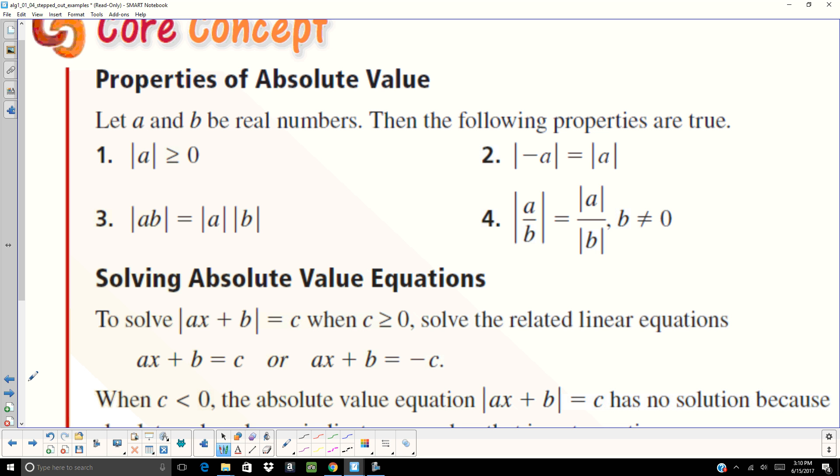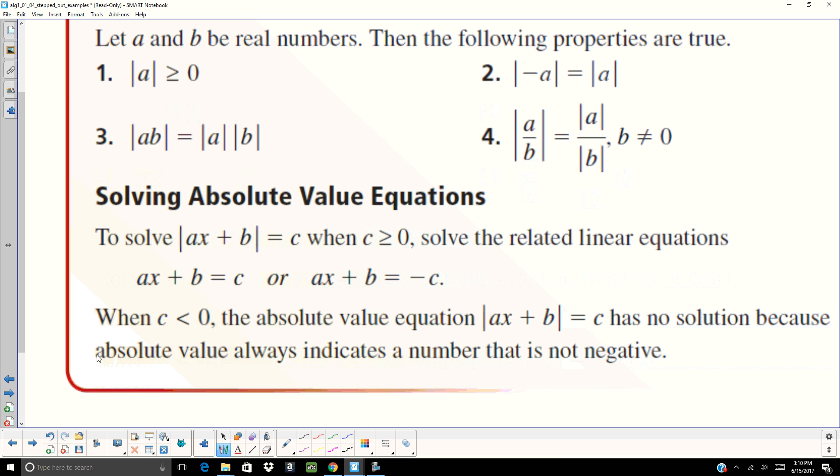So if you take the absolute value of a negative, it's going to be a positive number. When you are solving absolute values, you're going to have to take both the positive and the negative scenarios into consideration. So here it equals that C, but we're going to have to set up actually two equations. One where it equals C and one where it equals negative C. Because absolute value of C is C and the absolute value of negative C is C. So there's going to be two possible solutions, two equations.